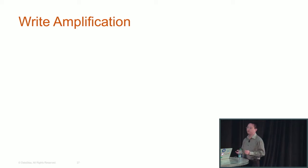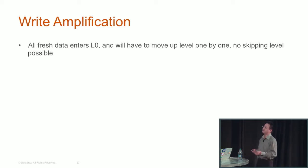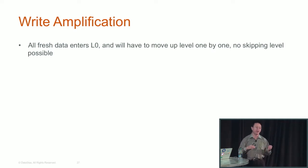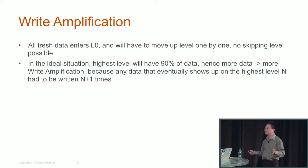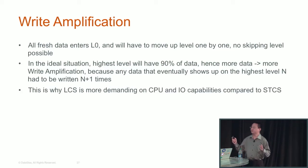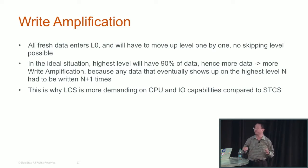Another concept is write amplification. All fresh data enters L0 and must move up level by level — no skipping levels, so L0 to L1 to L2, never L0 to L2. Ideally the highest level holds 90% of data. The more data you have, the more write amplification, because any data eventually shows up at the highest level and will have been written N+1 times. This is why LCS is more expensive in terms of CPU and I/O compared to STCS.